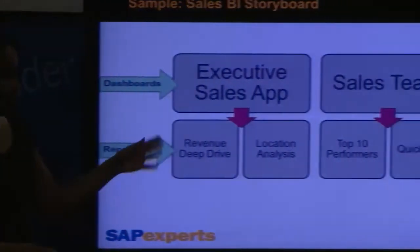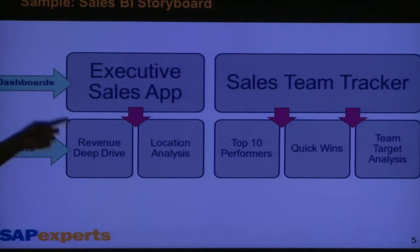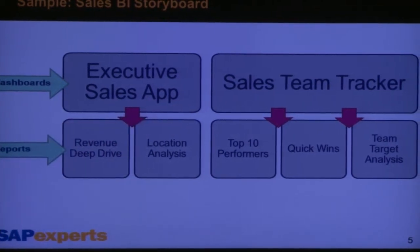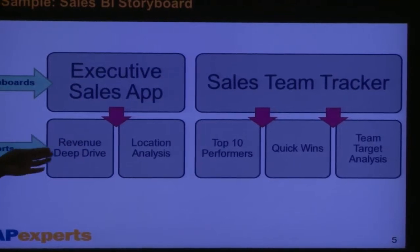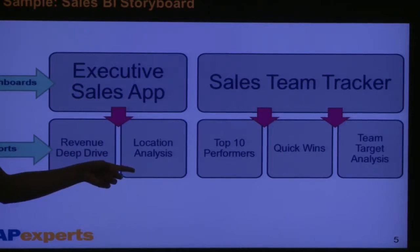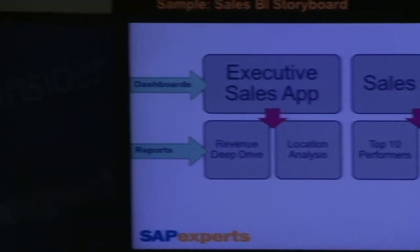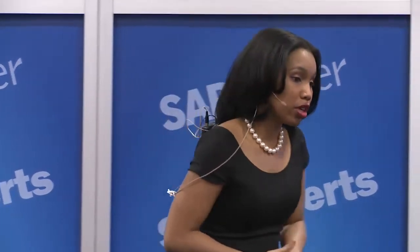Here's a good example of a simple BI storyboard. Executive Sales App — these are our dashboards for executives. Sales Team Tracker. On the Executive Sales App there's a drill-down for Revenue Deep Dive and Location Analysis. On the Sales Team Tracker you have Top 10 Performers, Quick Wins, and Team Target Analysis. Let me ask you: did any of these names stick out to anybody? Deep dive, right? And quick wins.